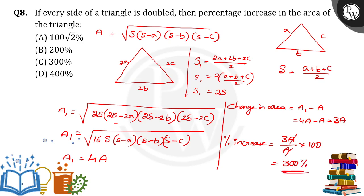Which means if every side of a triangle is doubled, then the percentage increase in the area of the triangle is 300%, so option C is the right answer. Thank you.